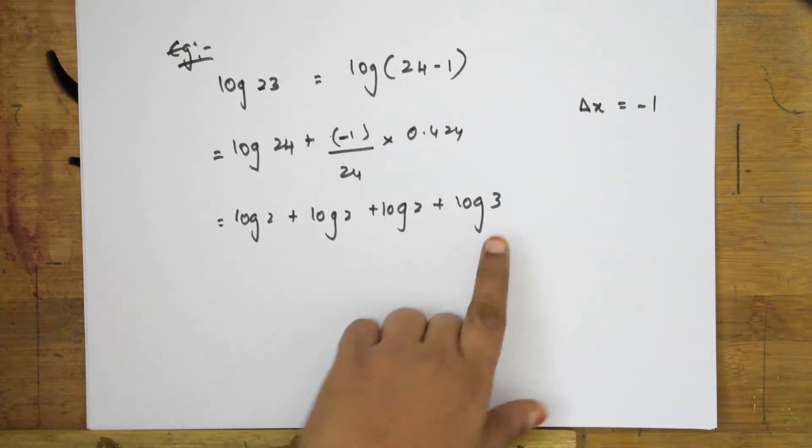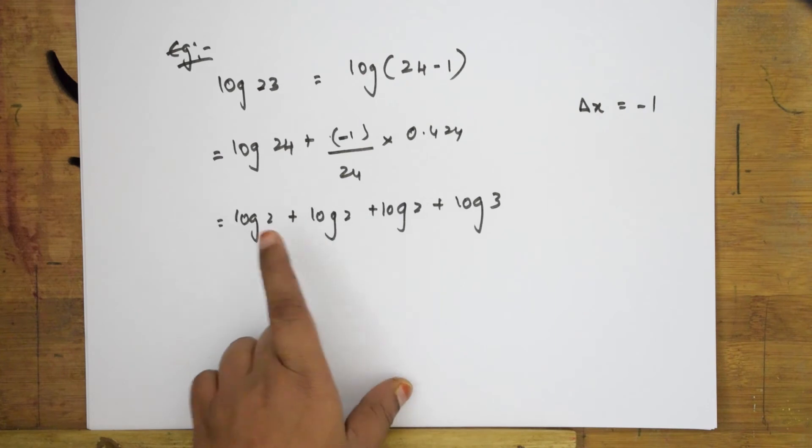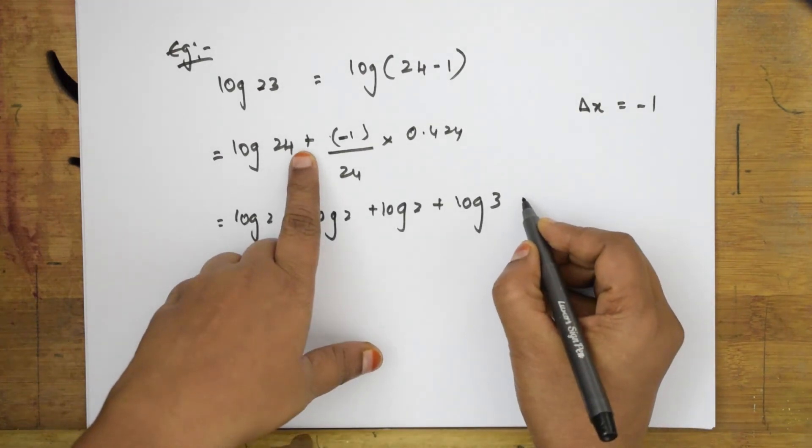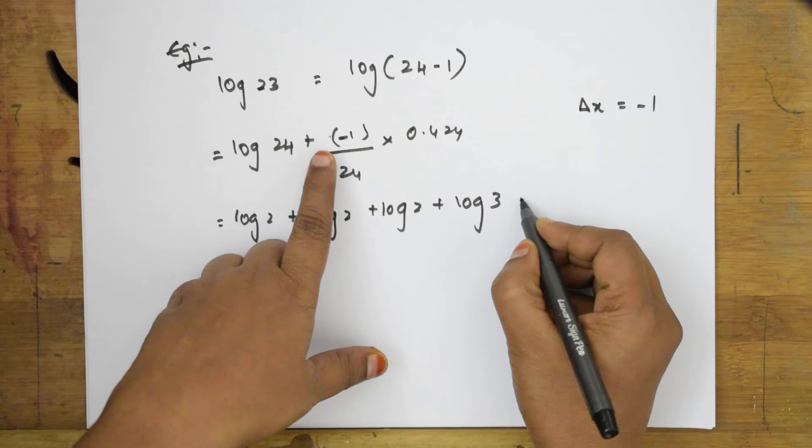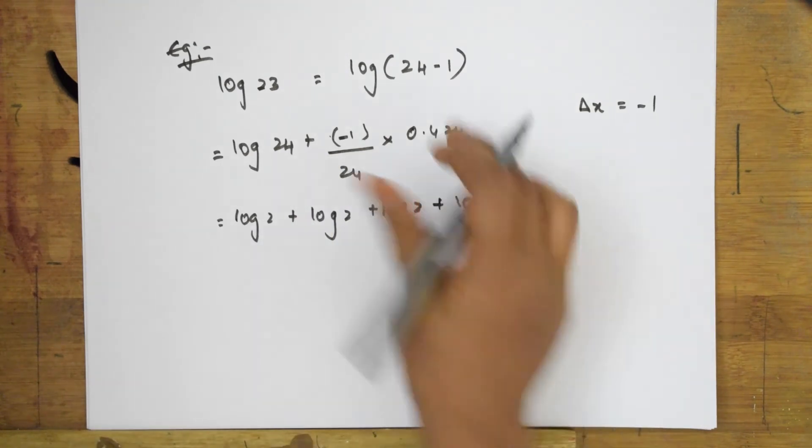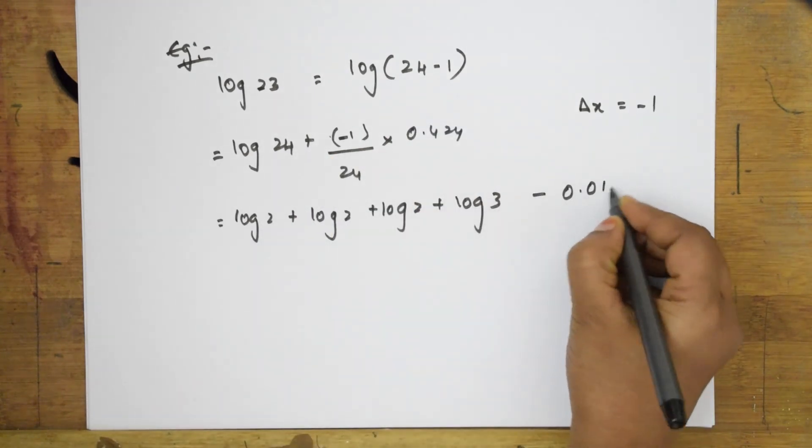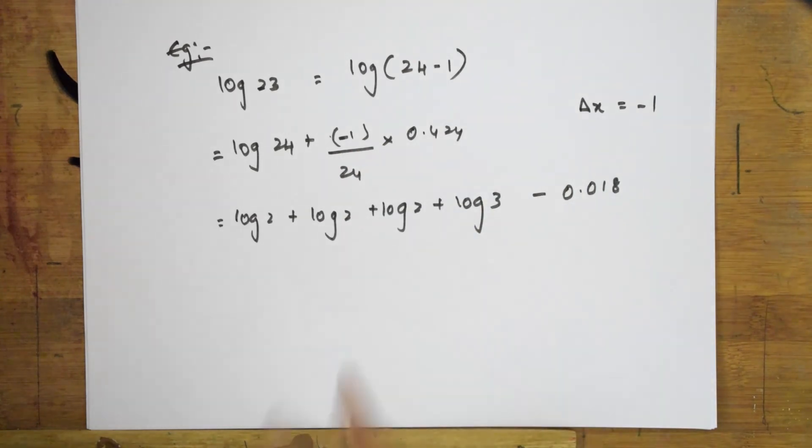How can you write log 24? It can be written as log 2 plus log 2 plus log 2 plus log 3. 2 times 2 is 4, times 2 is 8, times 3 is 24. This is already there. So, when I take this, when I solve this, I get an answer of 0.018. This factor, the decremental value.